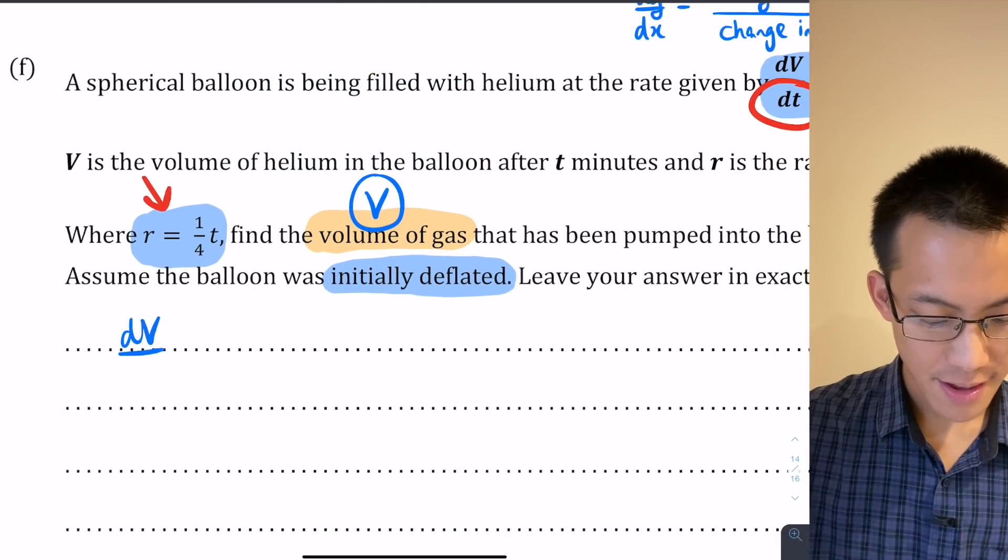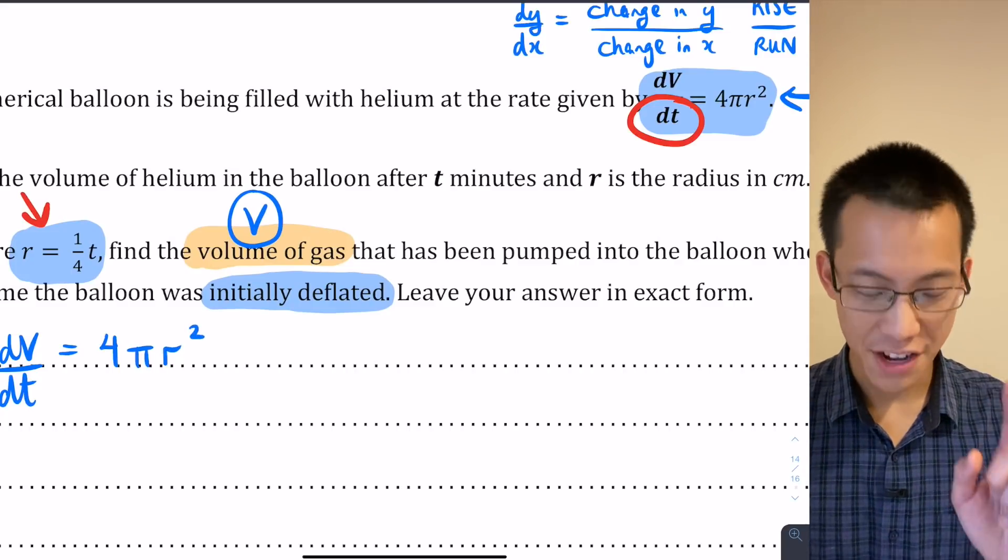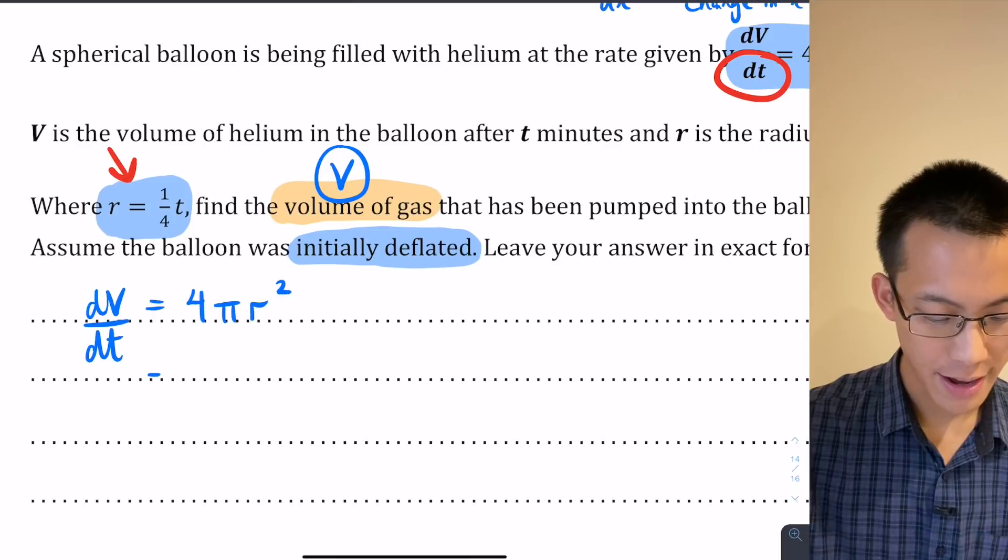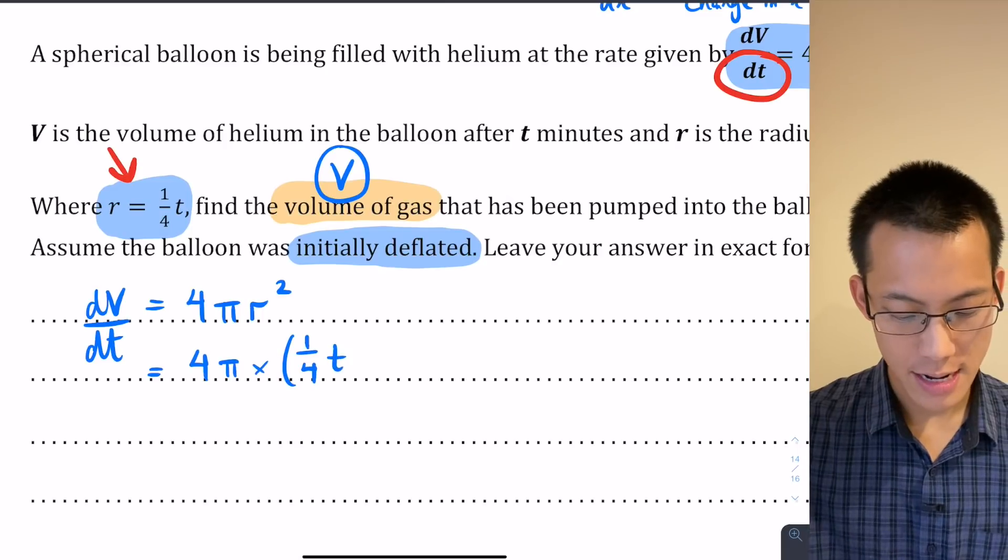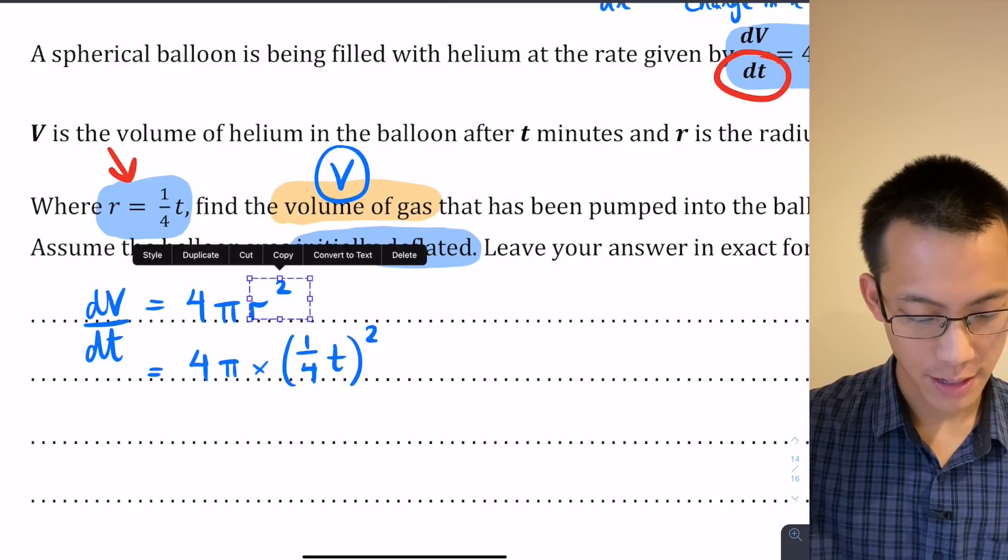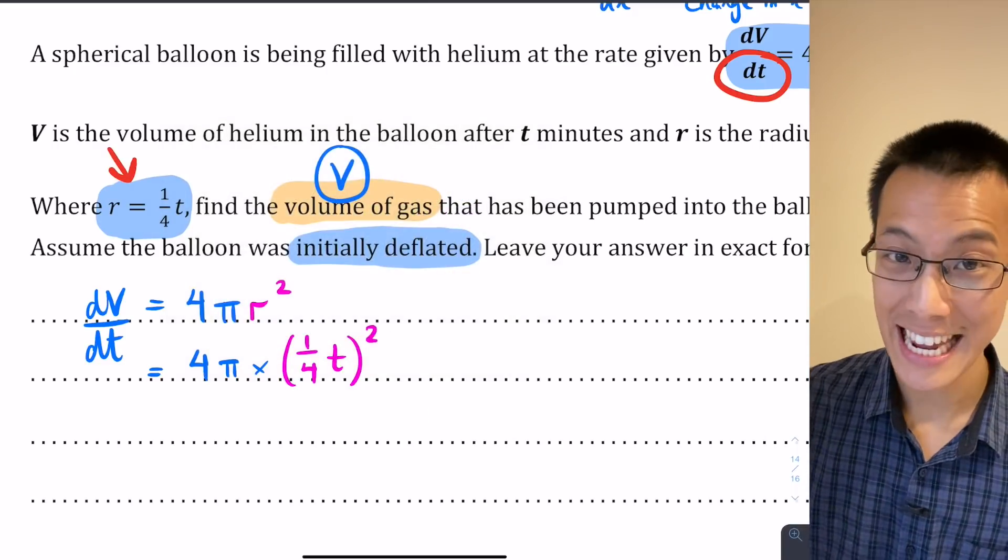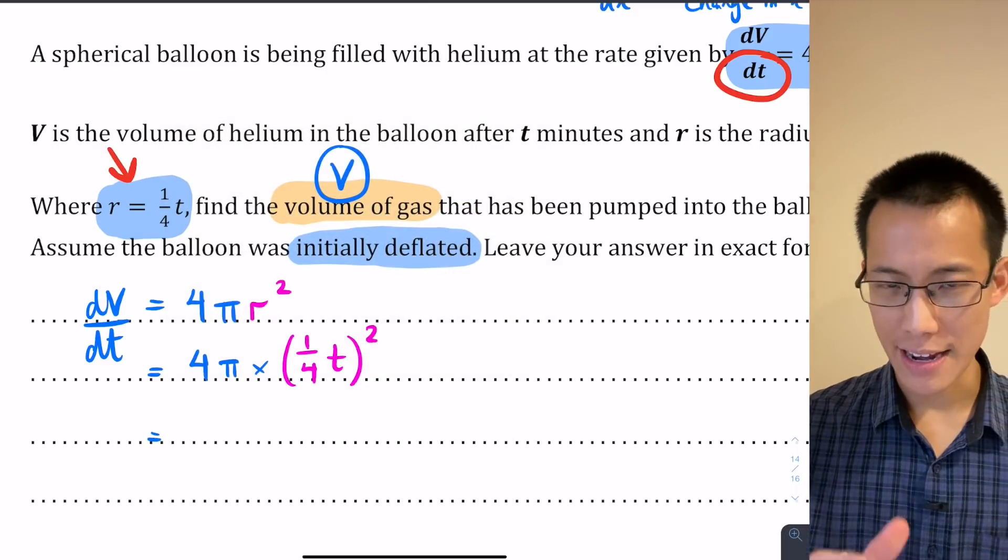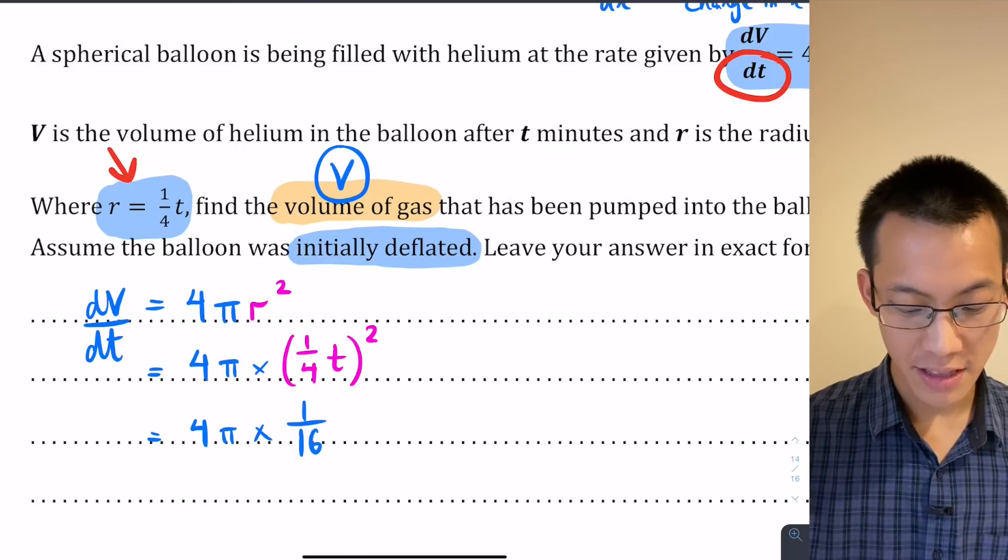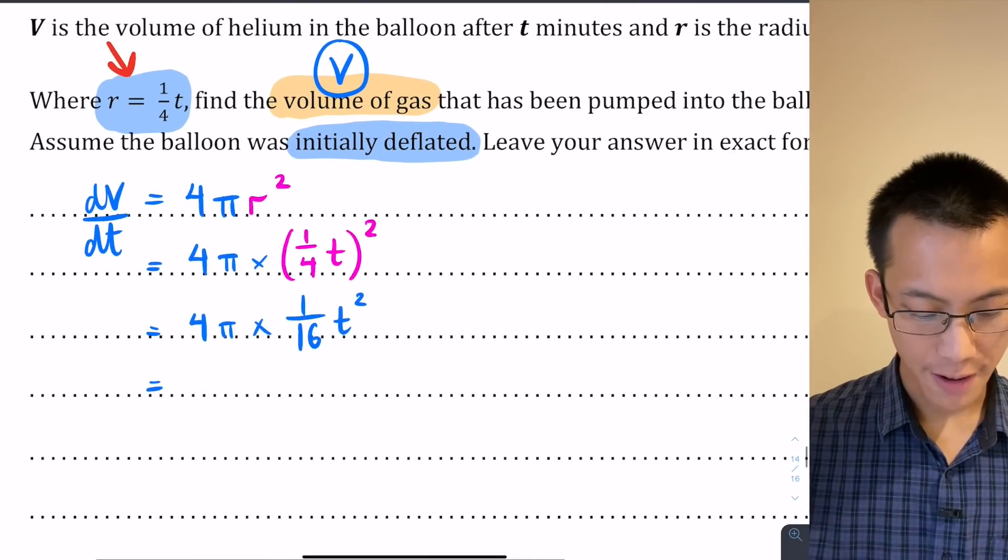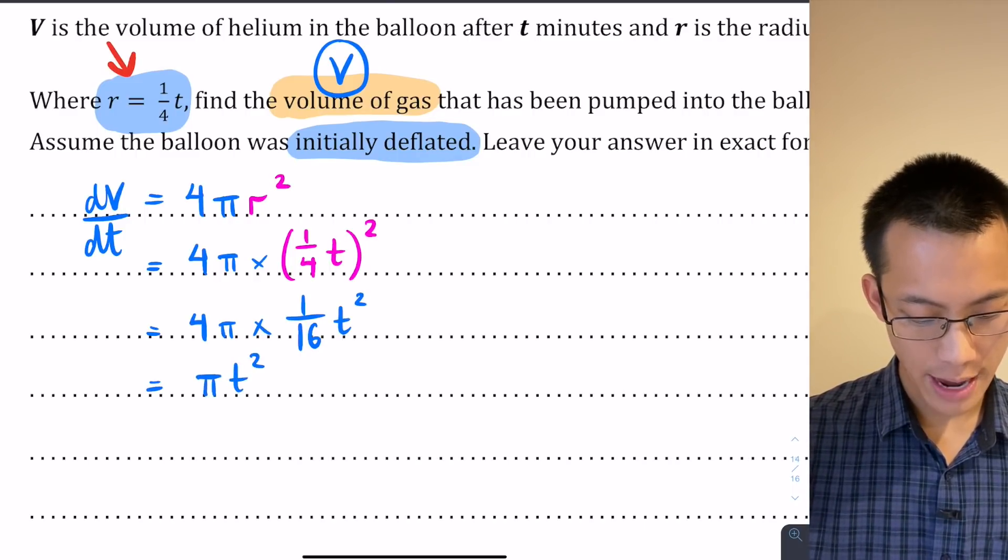dv/dt equals, from the original question, 4πr². But I know that r equals a quarter t, so therefore it's equal to 4π multiplied by 1/4 t all squared. That r² is being substituted for a quarter t all squared. Now let's tidy this up. I've got 4π times the quarter being squared, so that's 1/16, and the t is being squared, so it's t². I can simplify 4 times 1/16, that's a quarter, so what I'm getting is πt²/4.